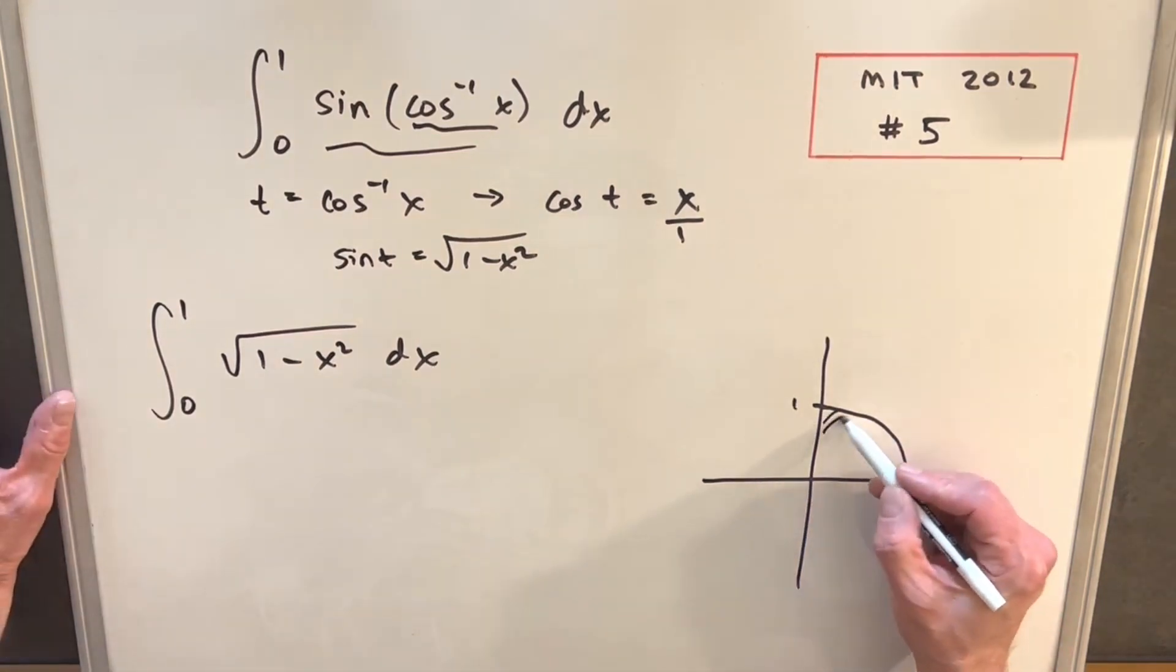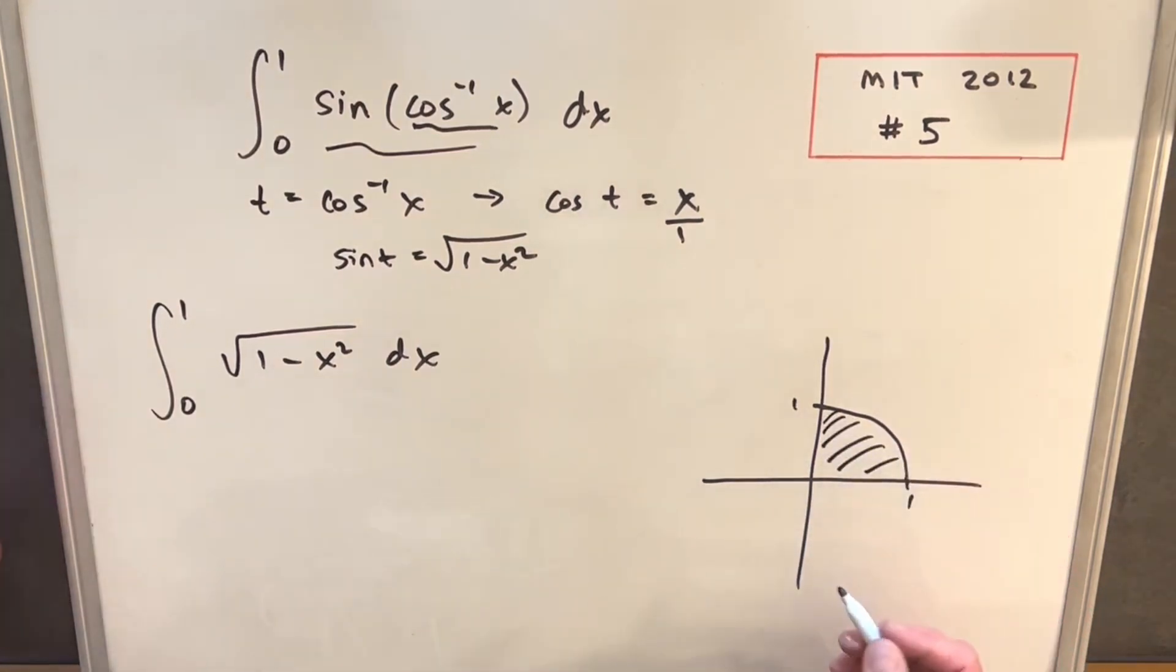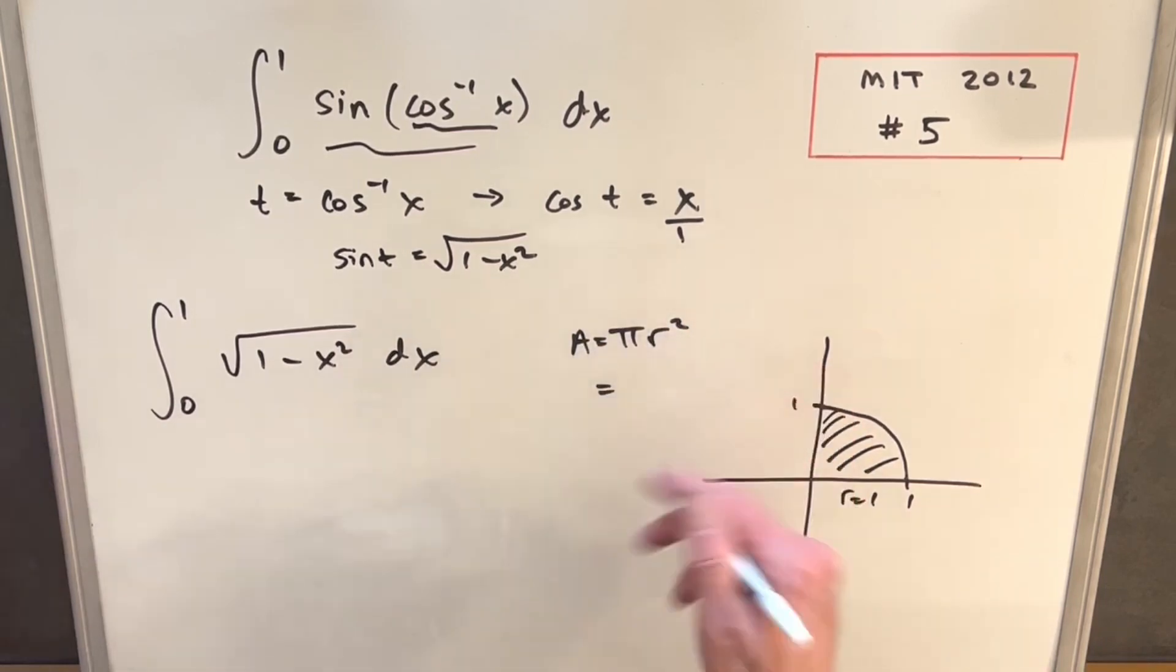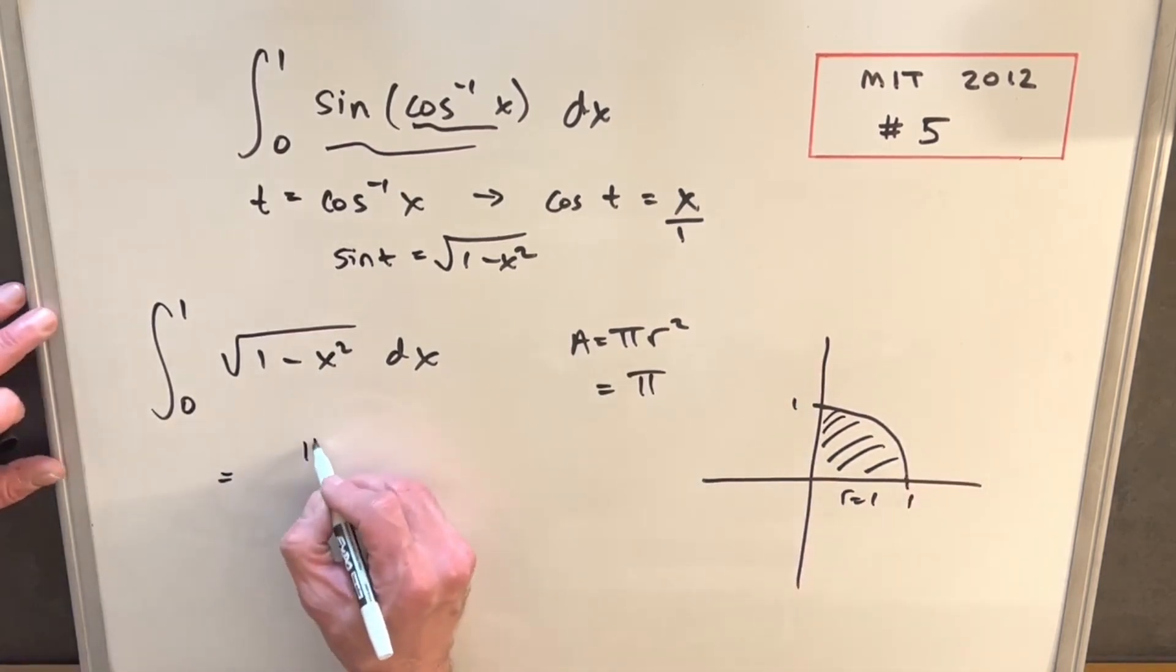And so all we need to do is we just need this area here for this quarter circle. We have a circle, the unit circle, the radius is 1. We know the area of the circle is pi r squared. So the area of the full circle would just be pi when radius is 1. But we have a quarter circle. All we need to do is divide by 4. And so our solution will just be pi over 4.